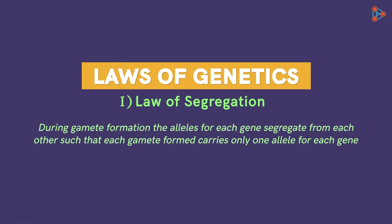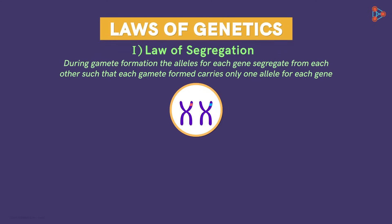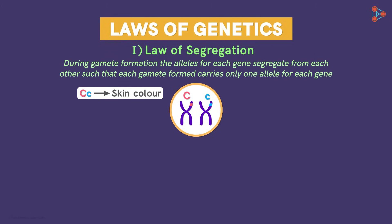It may still sound a bit confusing. To understand this, let's take a simple example. Assume we have a single cell with only two chromosomes, where the chromosomes have a set of genes CC for skin colour. The first part of the law says: during gamete formation, which is the process of meiosis.